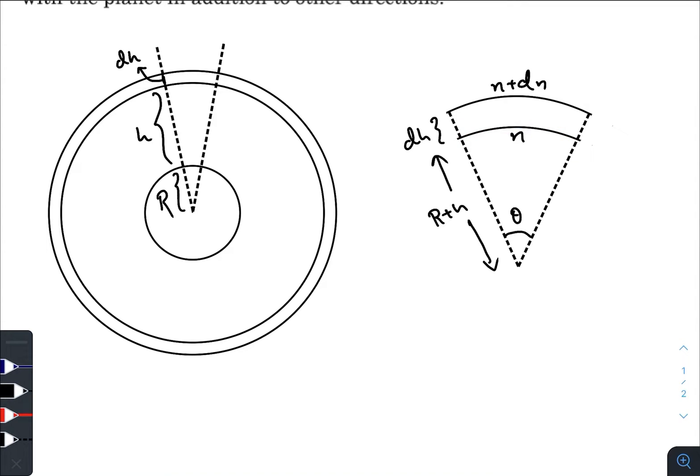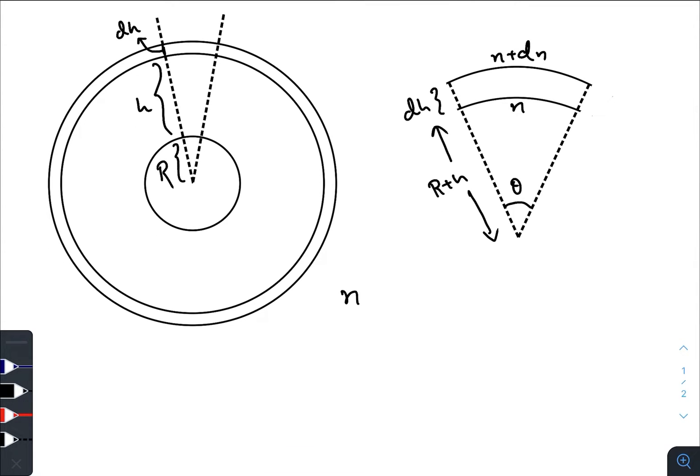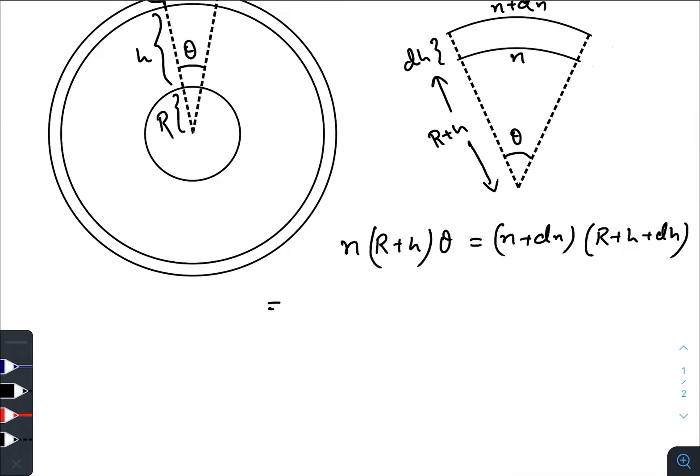So here the refractive index is n and the geometrical path will be (R + h) times θ. So this angle is θ. This will be equal to (n + dn) times (R + h + dh). So we have n(R + h)θ equals (n + dn)(R + h + dh)θ.